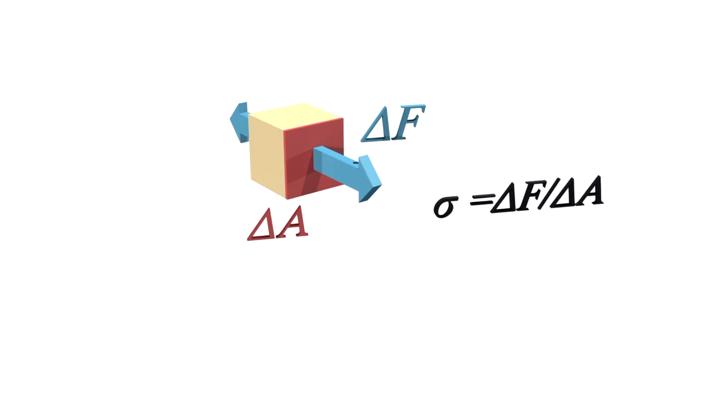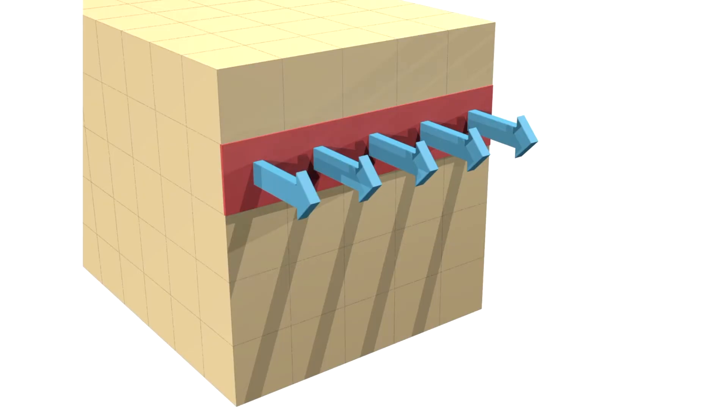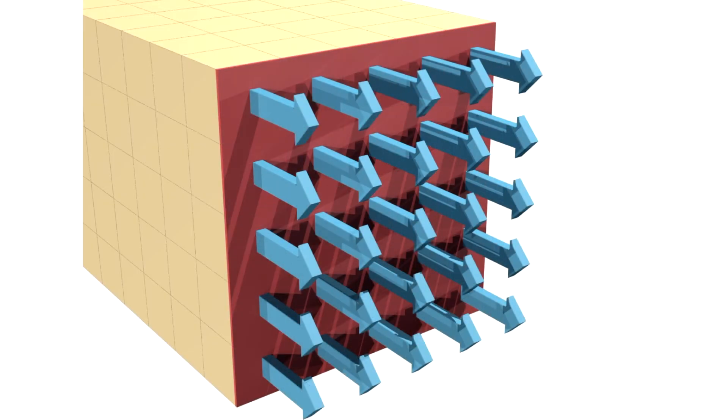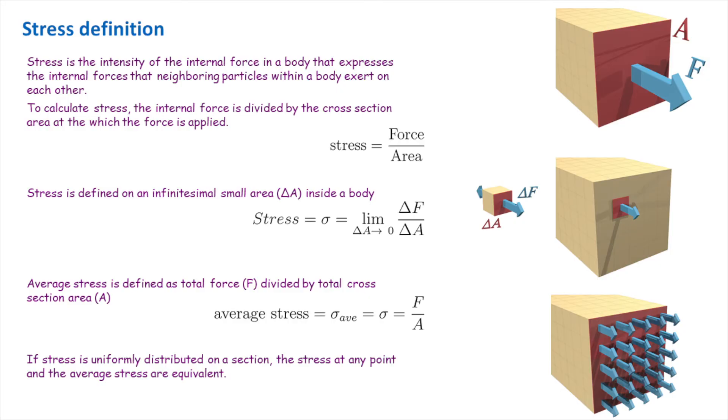If these stresses are uniformly distributed on a section, the stress at every point on a section is equal to the average stress. Thus, for simplicity, average stress is defined as the total force F divided by the total cross-section area A of a section. From now on in our course, the word stress simply refers to the average stress on the section unless specified otherwise.